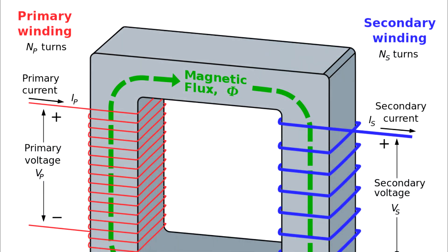You may ask why we need to convert higher voltages to lower voltages and vice versa. The answer is very simple: to reduce energy loss due to transmission. Moreover, the transformer is necessary to deal with variation of load, which is quite often seen when lights are switched on during night and switched off during morning.